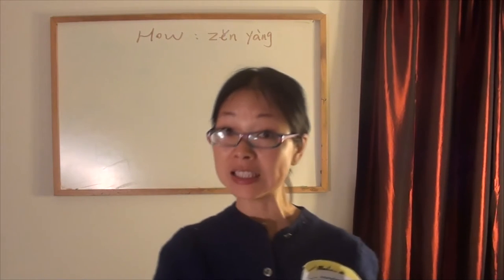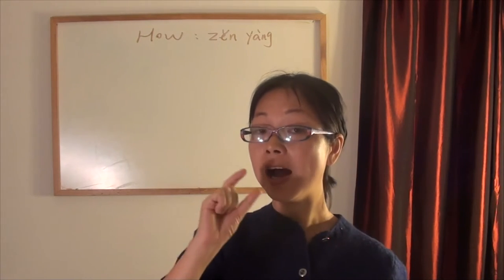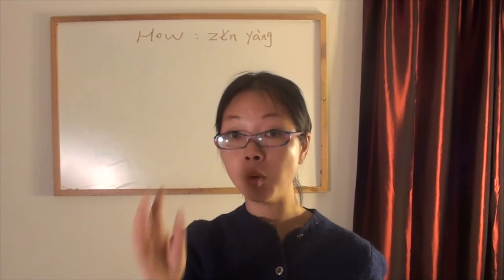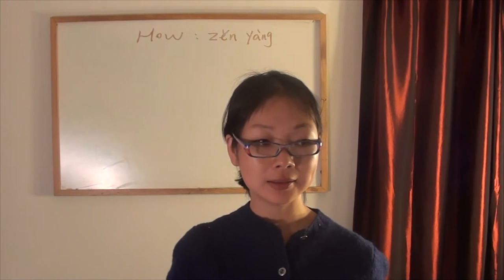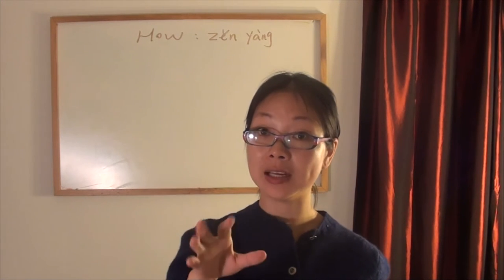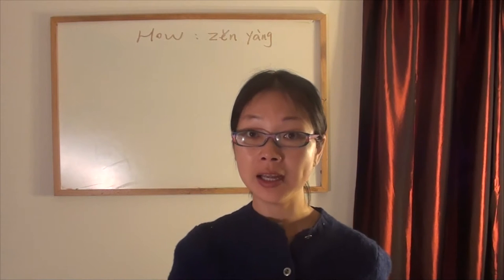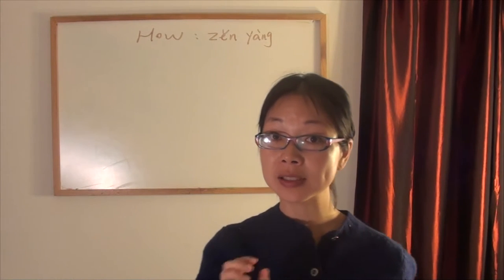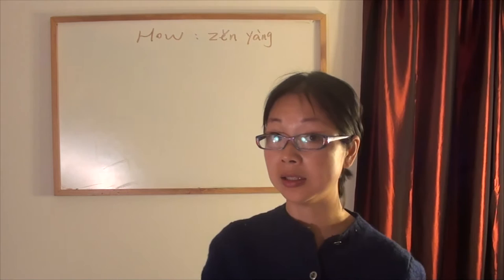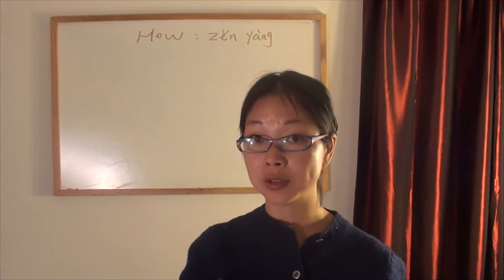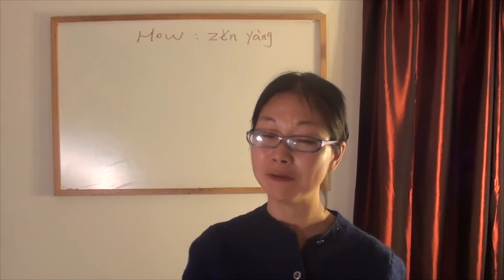There's a fixed sentence pattern for 'how.' Because 'how' is not like 'what,' 'who,' or 'why' — it's just one word. You can't simply put it into a sentence or translate it directly. No, it has a fixed sentence pattern. You have to learn that sentence pattern; then when you speak it in Chinese, you will not feel confused.